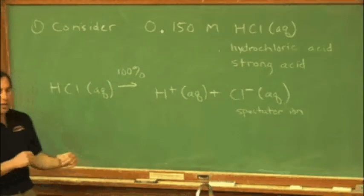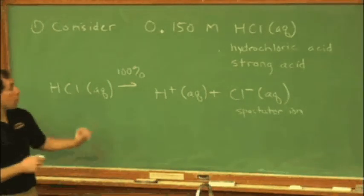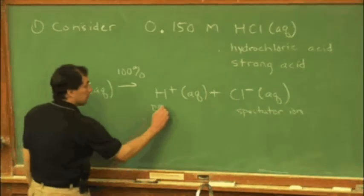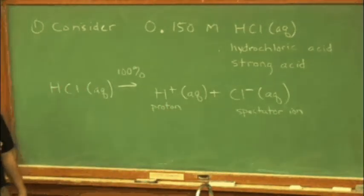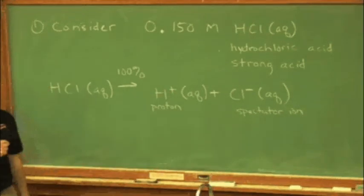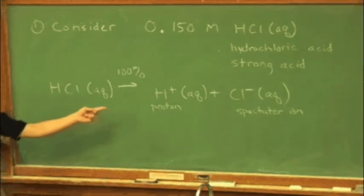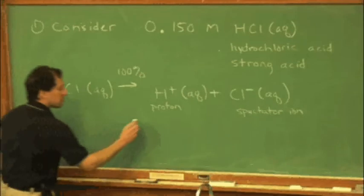becomes chloride, and very stable spectator ion. This is hydrogen ion, or what we can call a proton. After all, hydrogen is a proton and an electron. With the positive charge, hydrogen's lost its electron, so it's just existing as a proton.